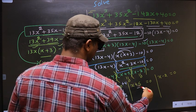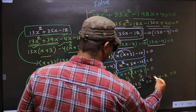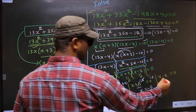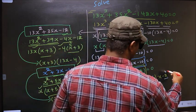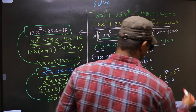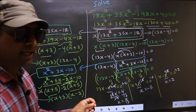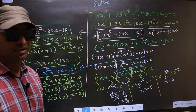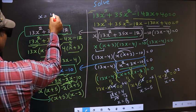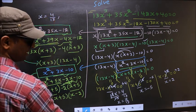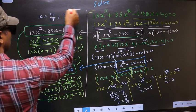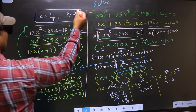From x + 5 = 0, subtract 5 to get x = -5. From x - 2 = 0, add 2 to get x = 2. So the x values that we got are x = 4/13, x = -5, and x = 2. This is our answer.